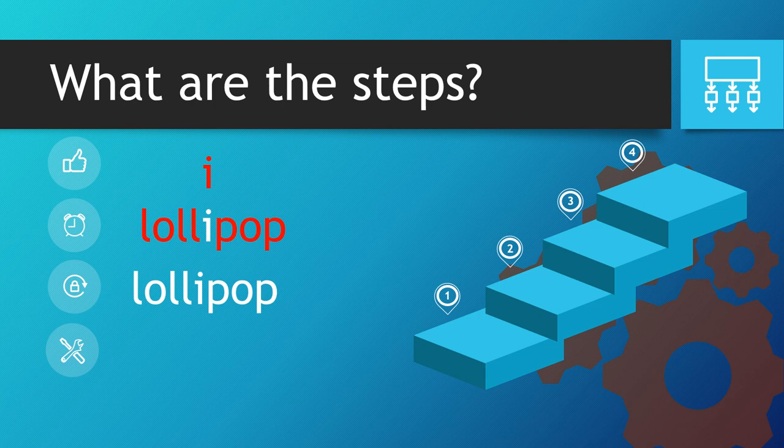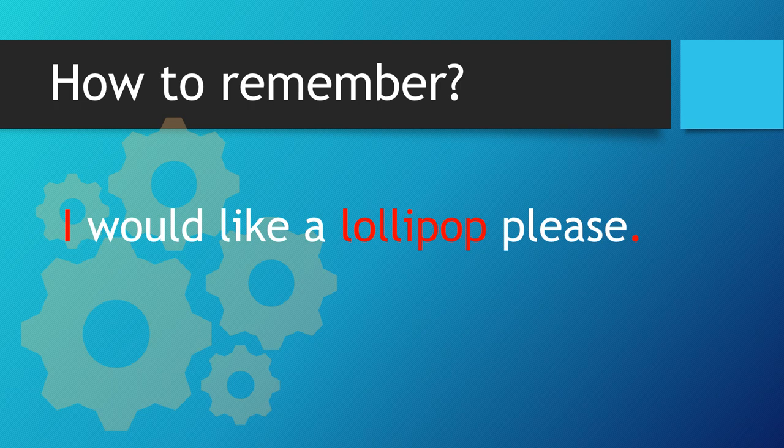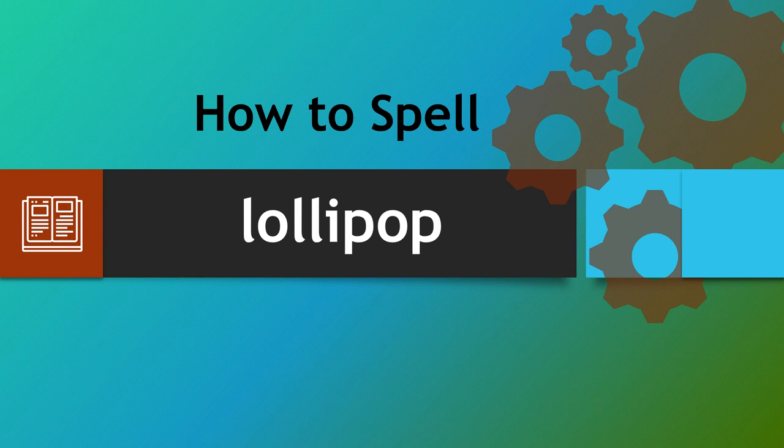Let's recap. I would like a lollipop please. This is it — nice and simple. Remember, that reminds you that we need an i within this word, not a y.